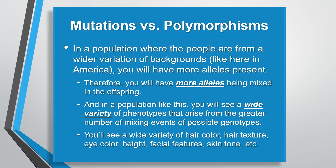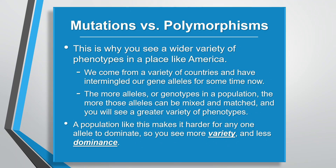In a population that's more open genetically — where the people are from a wider variety of backgrounds — you'll have a lot more alleles present. This allows for more alleles to be mixed in the offspring. Therefore in a population like this you'll see a wide variety of phenotypes arising from the greater number of possible genotype mixing events. You'll see a wide variety of skin color, hair texture, eye color, height, facial features, etc.